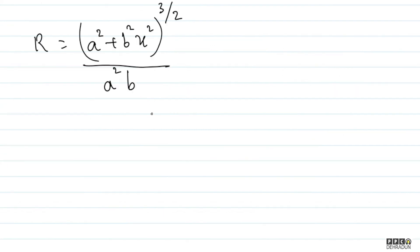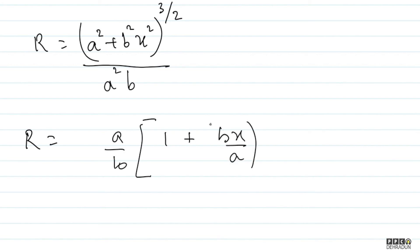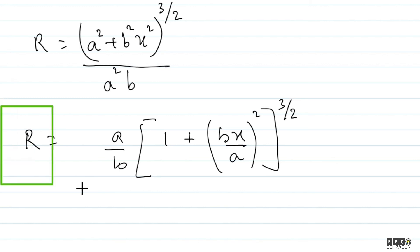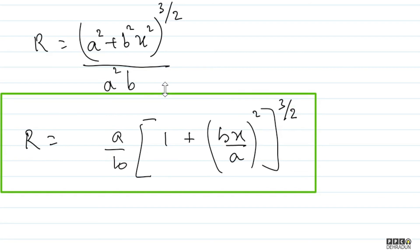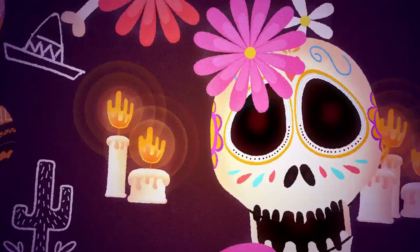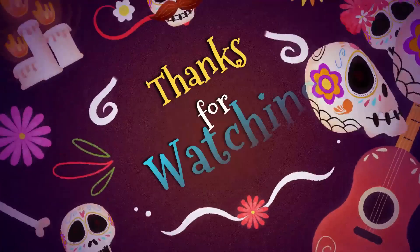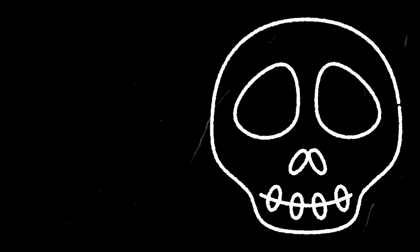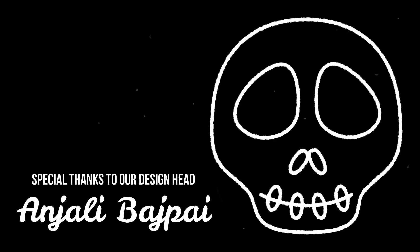Simplifying, R = (a/b) multiplied by (1 + (bx/a)²)^(3/2). This is our final answer. You can see this solution — in case you have any doubt, feel free to contact me. I'll be very happy to help you. Take care, guys. Bye-bye.